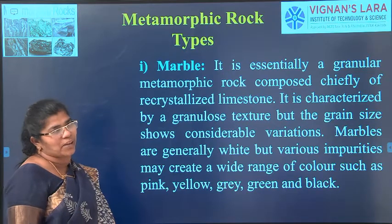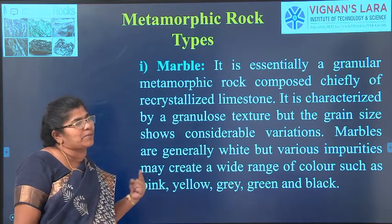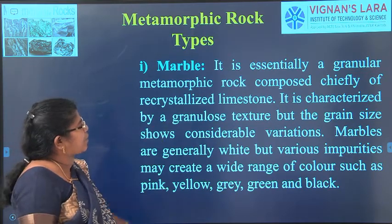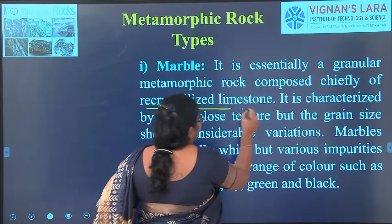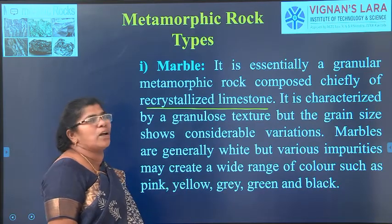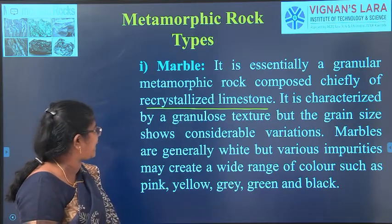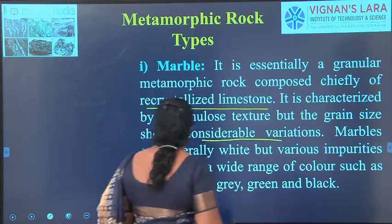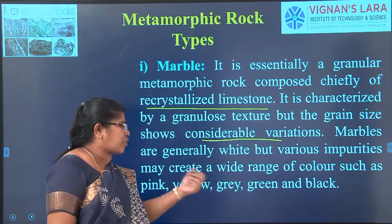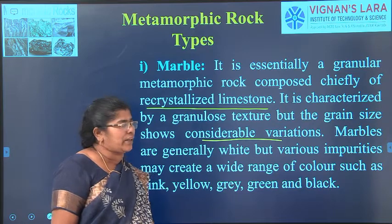Some types of metamorphic rocks: first is marble. When you think of marble, think of the Taj Mahal. It is essentially a granular metamorphic rock composed chiefly of recrystallized limestone. The limestone undergoes pressure and temperature, which is the main formation process of marble, used mostly as a building material. It is characterized by granular structure but the grain size shows considerable variation. Marbles are generally white but impurities can give colors like green, black, grey, or yellow.